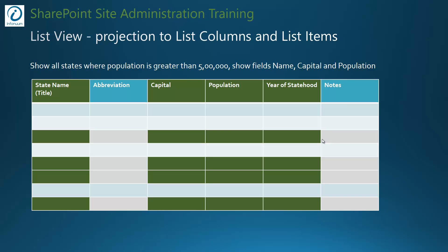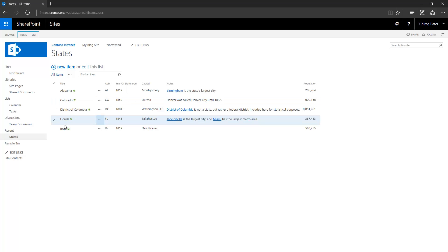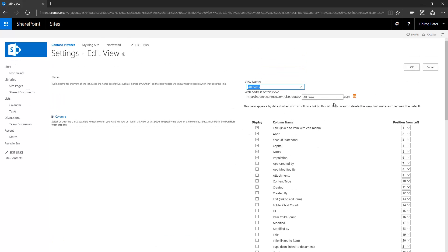A SharePoint list view is just a projection of list columns and list items. Here I have a states list shown as a table with six columns and a few records. My goal is to select only a few columns and a few records — specifically, show all states where population is greater than 500,000, and only show name, capital, and population fields. I already have an 'all items' view, and I can either modify this view or create a new one.